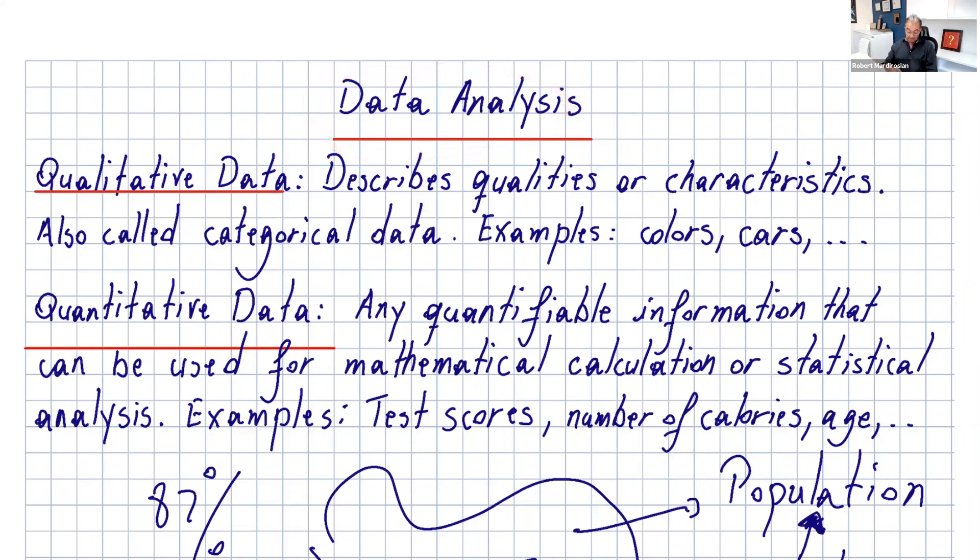Before starting that, I'm sure you have seen this in the definitions. We have two types of data: qualitative data and quantitative data. Qualitative data describes qualities or characteristics, also called categorical data.